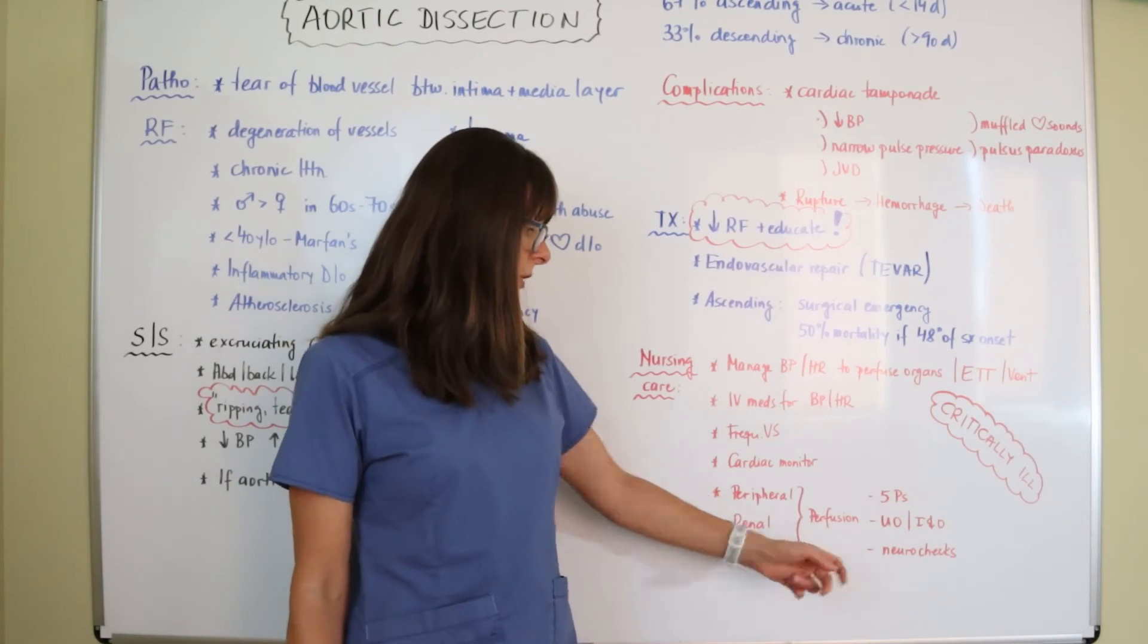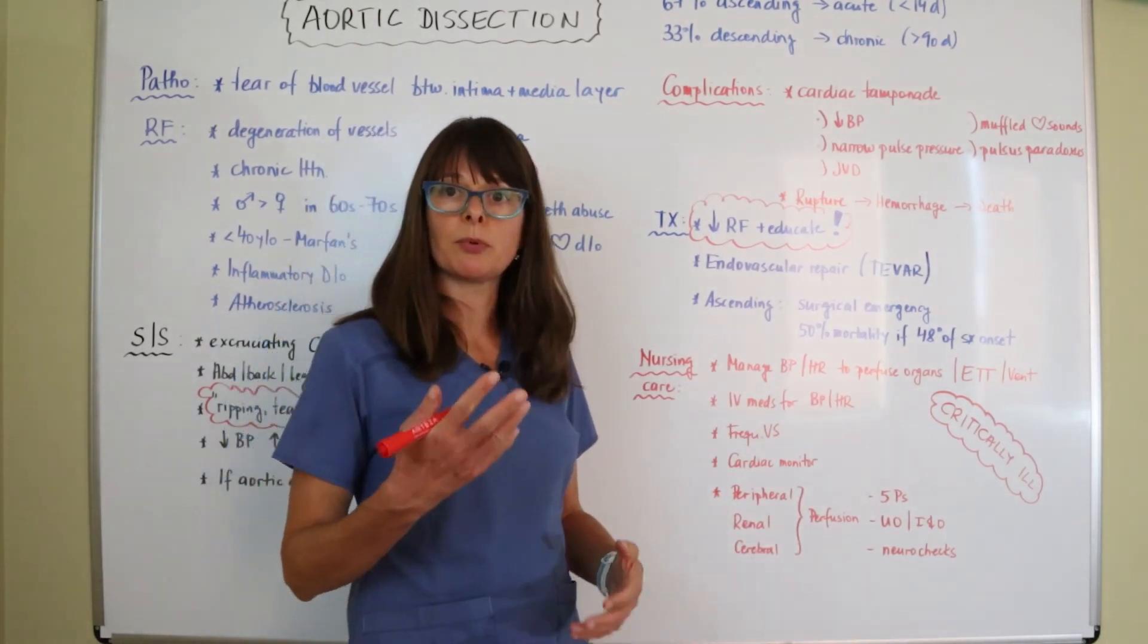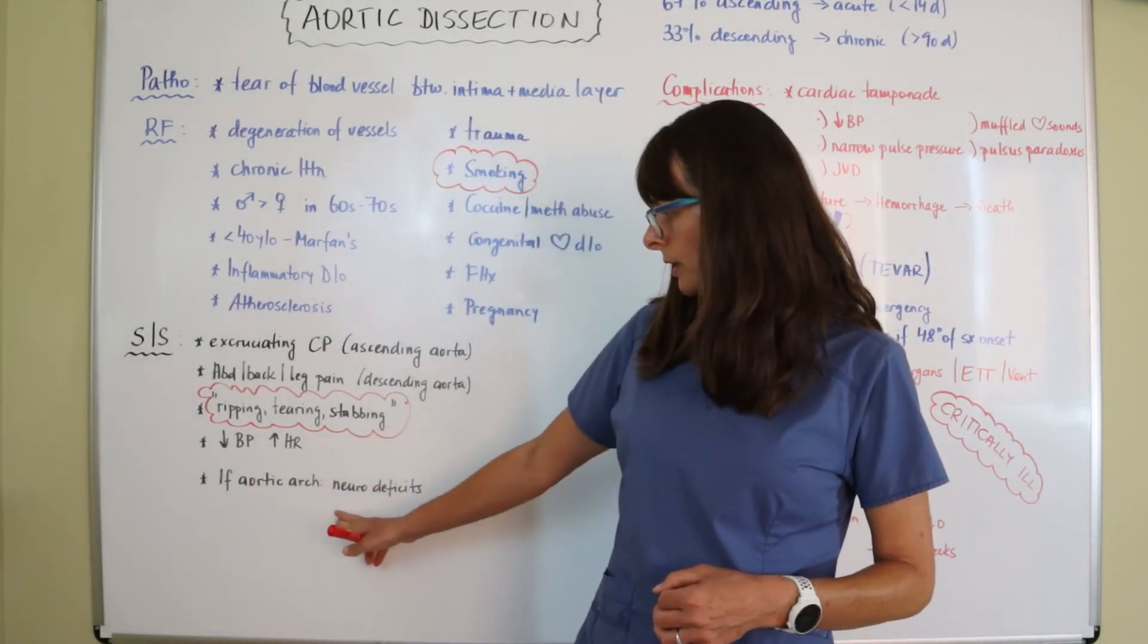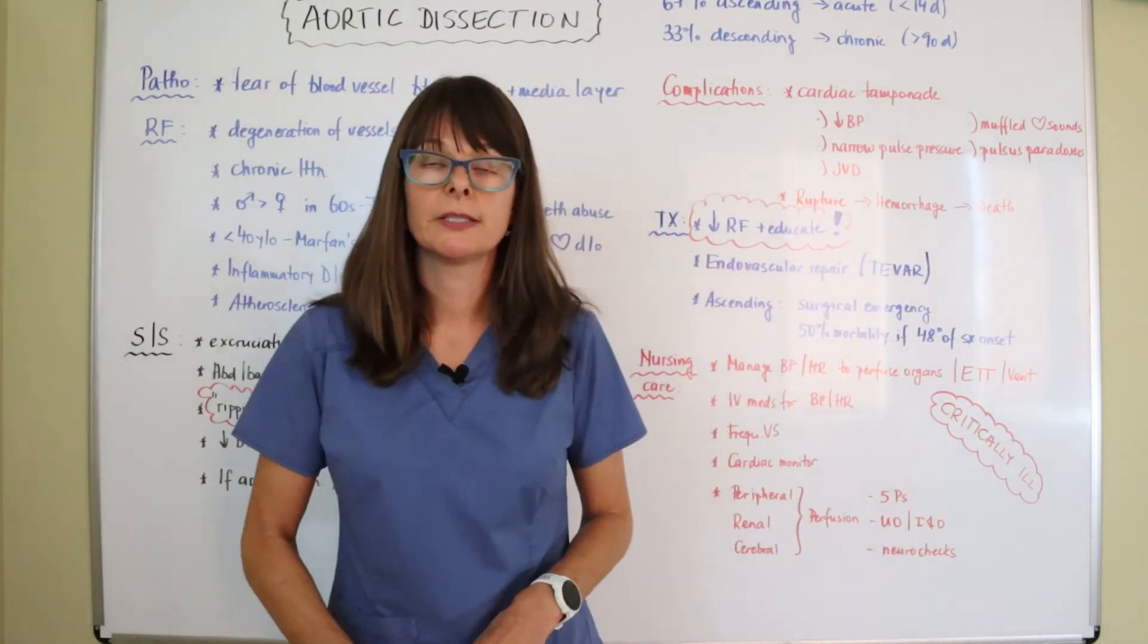And then cerebral perfusion with neural checks to see if they are perfusing and maybe if they are having an aortic arch dissection. This will be very evident in these neural checks.